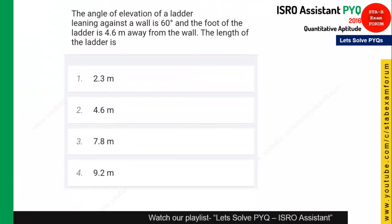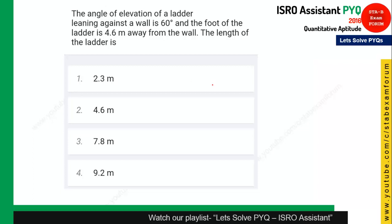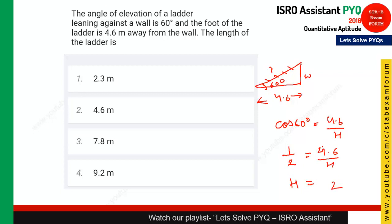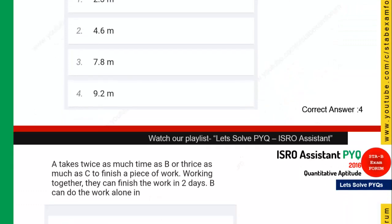The next question is from height and distance. A ladder is leaned against a wall at 60 degrees. The distance from the foot of the ladder to the wall is 4.6 meters. Using cos 60° = adjacent/hypotenuse: 1/2 = 4.6/L, so L = 4.6 × 2 = 9.2 meters. Option 4 is the right answer.